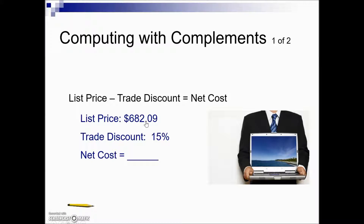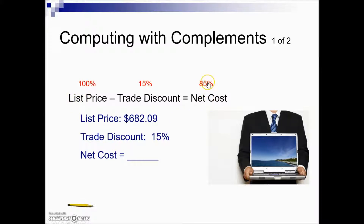When we compute a net cost with complements, we do our subtraction first — and by subtraction I'm talking about the percentages. The list price, which is our base, should be considered as 100%. We're subtracting the 15% to give us a net cost of 85%. So if we know our base of $682.09 and we know the rate, we can find the net cost by taking 85% of our base.